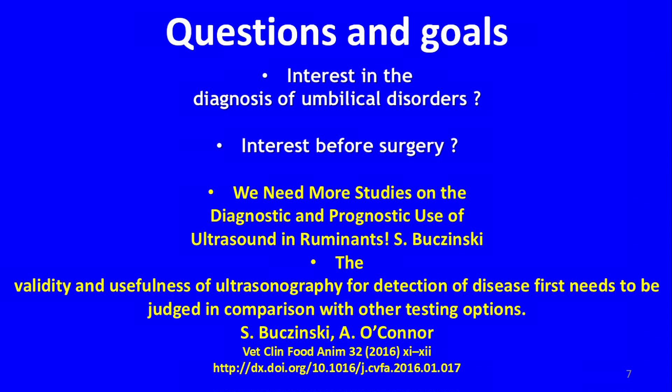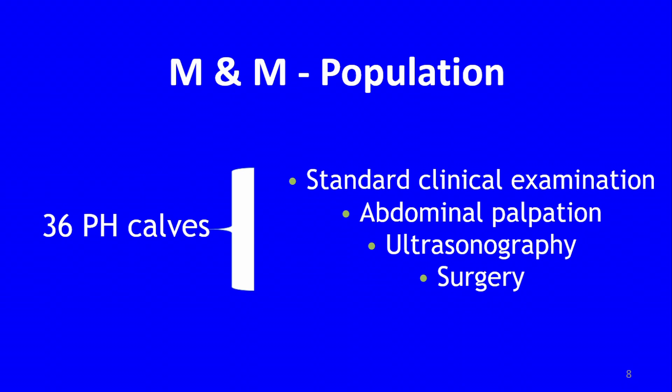We had about 36 Holstein calves, most of them females, and most of them younger than two months old. This is important because we wanted to compare ultrasonography to deep abdominal palpation. When calves get older, it is impossible to get a proper deep palpation of the abdomen. For all 36 calves, we performed a complete standard clinical examination with a trained teacher and trained student, then abdominal palpation, then ultrasonography, and then surgery. We compared essentially these three parameters: palpation, ultrasonography, and surgery.